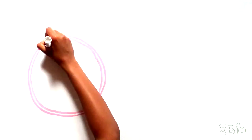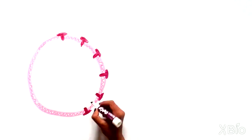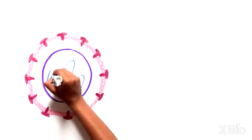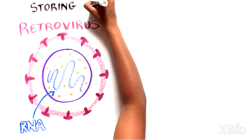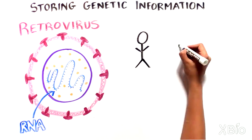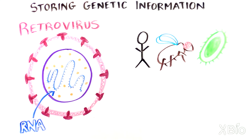These scientists were studying viruses and they realized that some viruses, called retroviruses, use RNA and not DNA to store their genetic information. This is different from most other organisms.